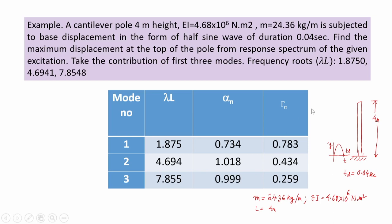This demonstrates the use of the shock spectrum to obtain maximum displacement for a continuous structure. The shock spectrum is obtained using the simple concept of a single-degree-of-freedom system, then utilizing the t_d/T_n ratio (or ω/ω_n ratio in the case of harmonic excitation) as parameters. The corresponding response ordinates are selected, and the maximum displacement response is calculated by summing contributions from all modes.